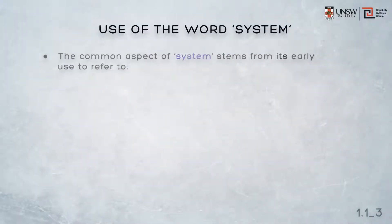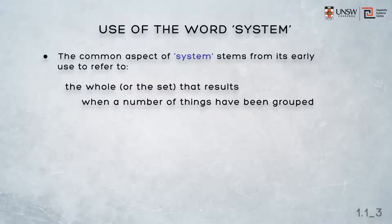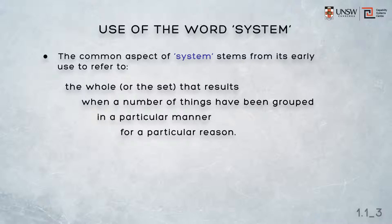Now in all these contexts, the common aspect of the use of the word system comes from its early meaning and its Greek root. A system refers to the whole, or the set, that results when a number of things have been grouped together in a particular manner and for a particular reason. What the set is, how it's grouped, and for what reason, is context dependent, however.